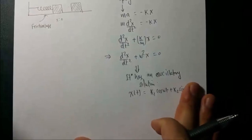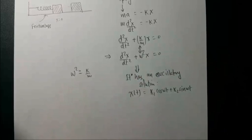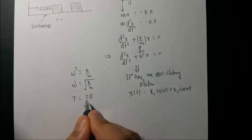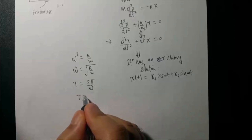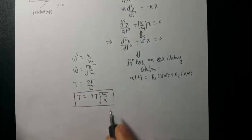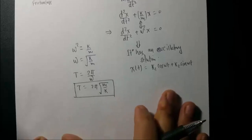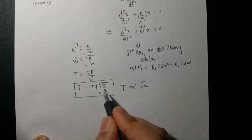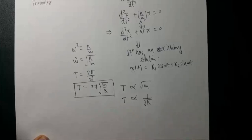From ω² = k/m, we get ω = √(k/m). The time period T = 2π/ω = 2π√(m/k). This formula works for both horizontal and vertical mass-spring oscillators. The period is proportional to the square root of mass and inversely proportional to the square root of the spring constant.